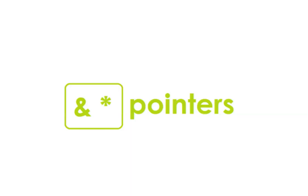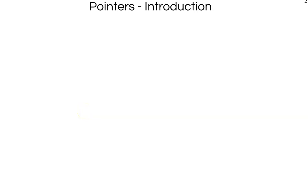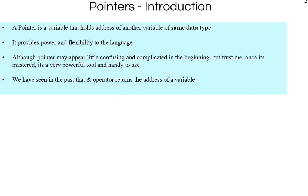Welcome back. In this chapter we will look at pointers. Pointer is one of the primary reasons C is so powerful and it is able to execute low level programming. A pointer is a variable that holds the address of another variable of the same data type. It provides power and flexibility to the language. Initially it may be confusing but trust me you will be better at it in a very short time.